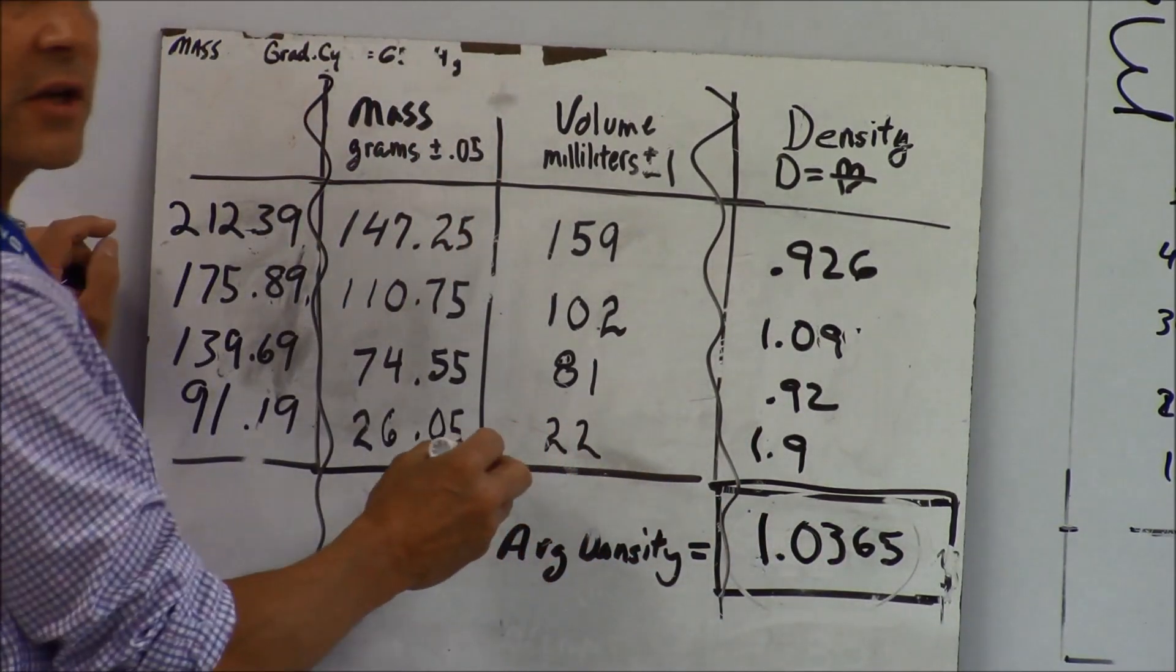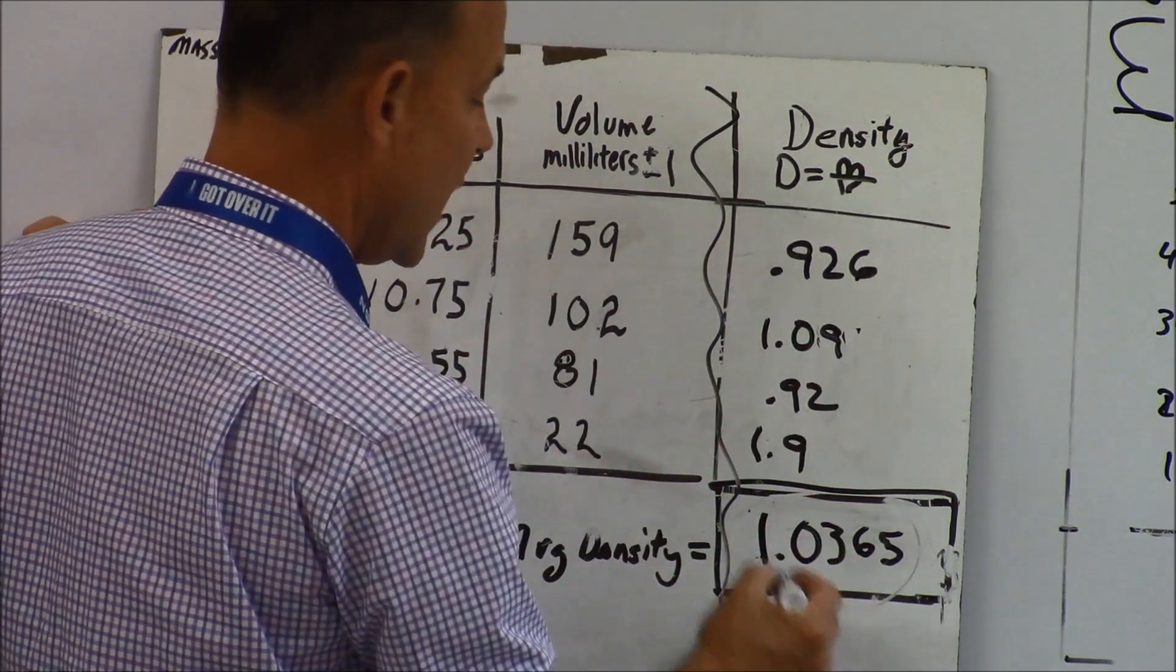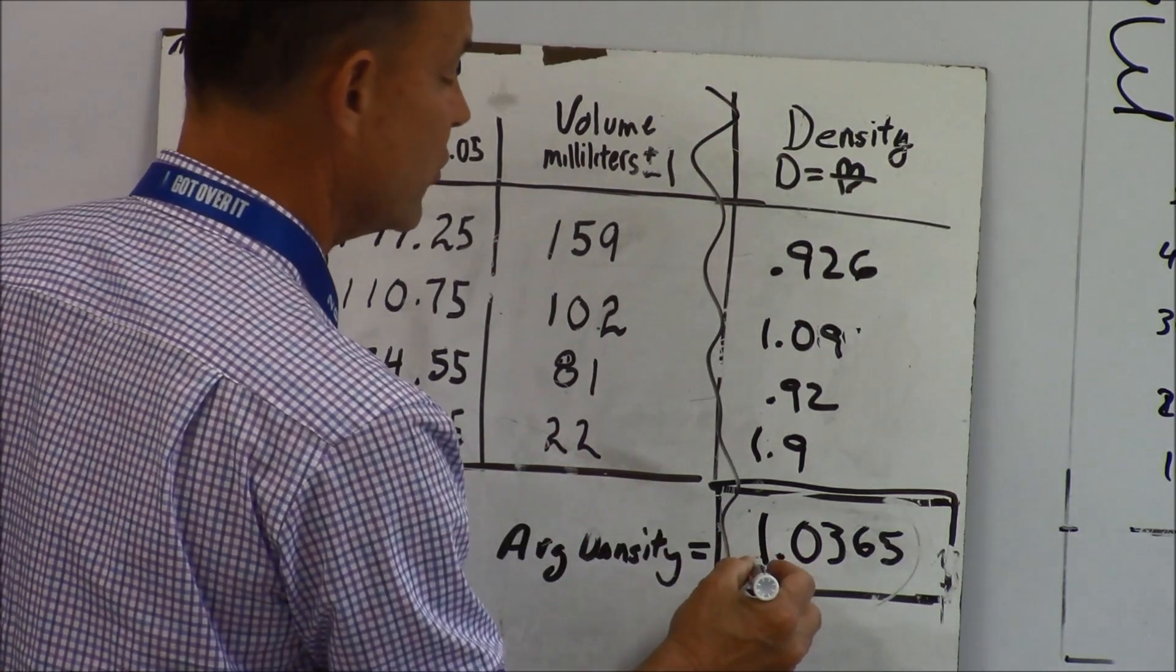This is the way I do it when I'm rounding. I say I got to have two sig figs, so I'm going to draw two lines under the first two numbers.